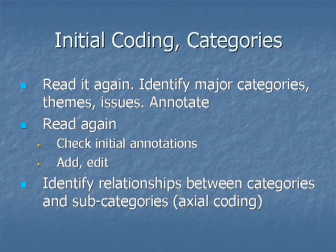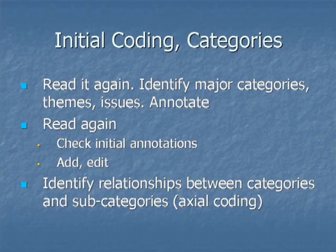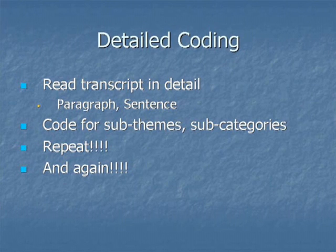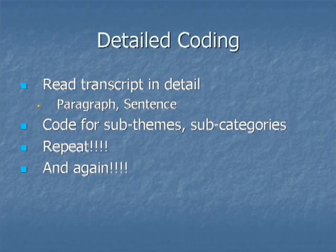Once you feel familiar with the total transcript or audio, start your coding — this will of course already have started to happen in your head, but really start to record it at this stage. Read it again, identify major categories, themes, and issues, and start to annotate — initially in a rough form. Then read it again, check your initial annotations, add, edit, and change. This is meant to be a dynamic process. Start to identify relationships between categories and subcategories — that is, properties that are similar. At this point you're moving towards detailed coding: read the transcript paragraph by paragraph, sentence by sentence, coding for sub-themes and subcategories. Then repeat and repeat again until you're confident you can go no further.